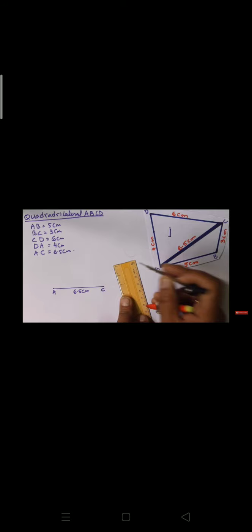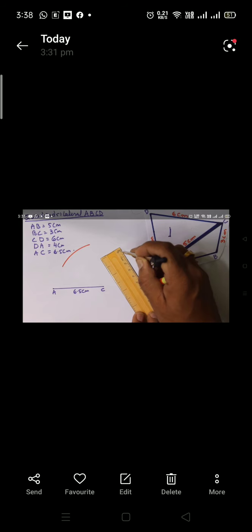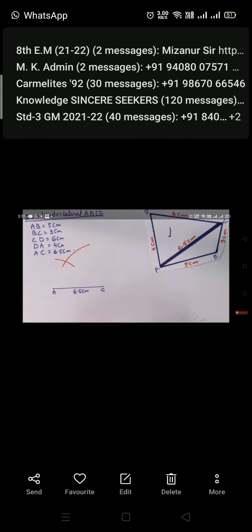Now take the measurement of CD, which is 6 cm. From C, draw an arc of 6 cm. Then set the compass to AD, which is 4 cm, and from A draw another arc. The two arcs will intersect, and that point of intersection is your D. Then with a scale, join DA and DC. Half your quadrilateral is now done.